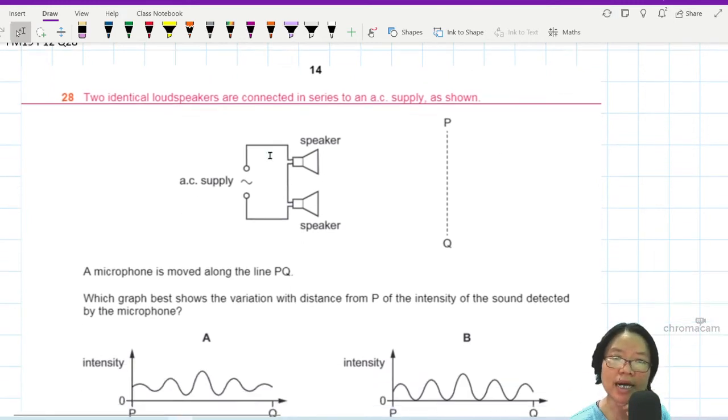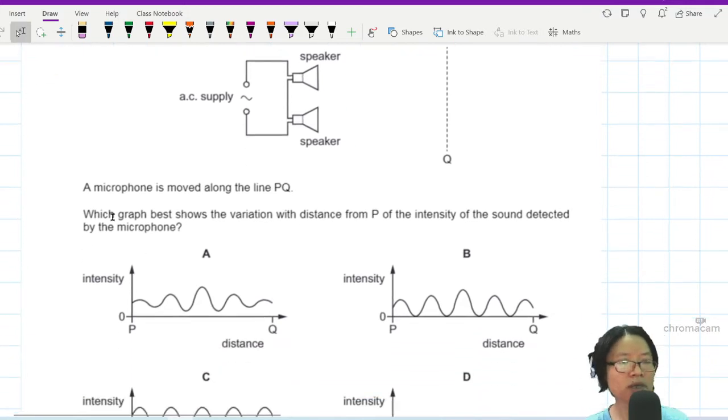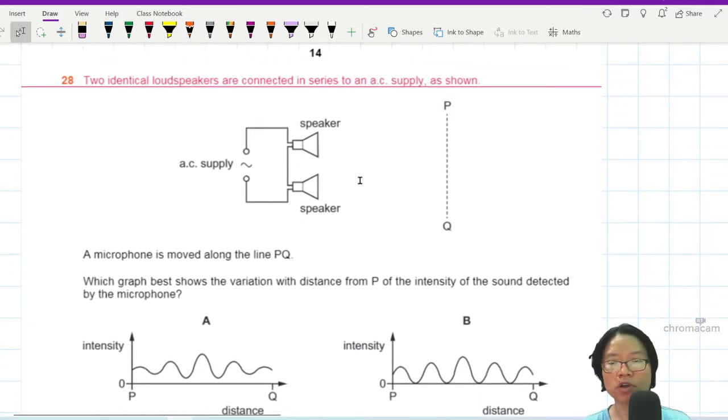Two identical loudspeakers are connected in series to an AC supply as shown. A microphone is moved along the line PQ. Which graph best shows the variation from P? You want to see how the intensity of sound changes as the microphone moves along the line PQ.